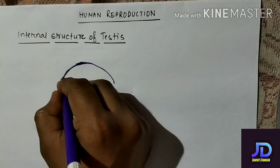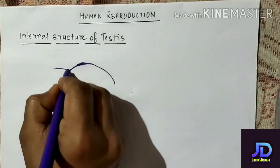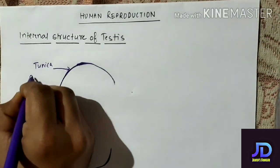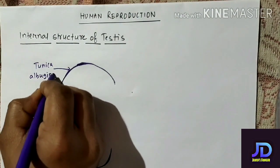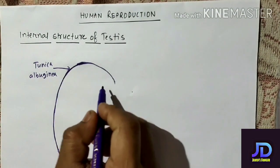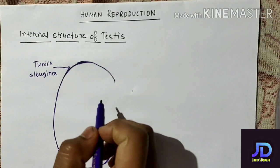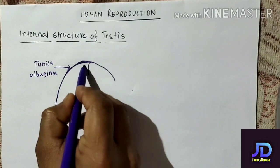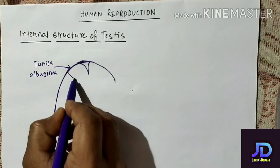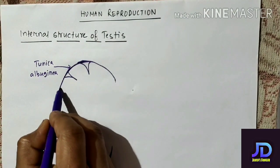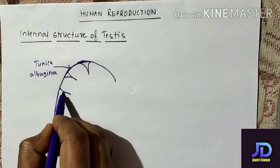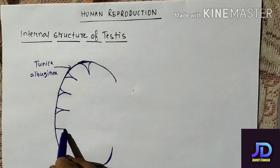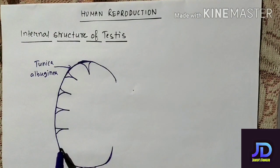This layer is called the tunica albuginea. Now this tunica albuginea undergoes infolding, and because of the infolding it results in the formation of septum. These are all septum — septum means partition.